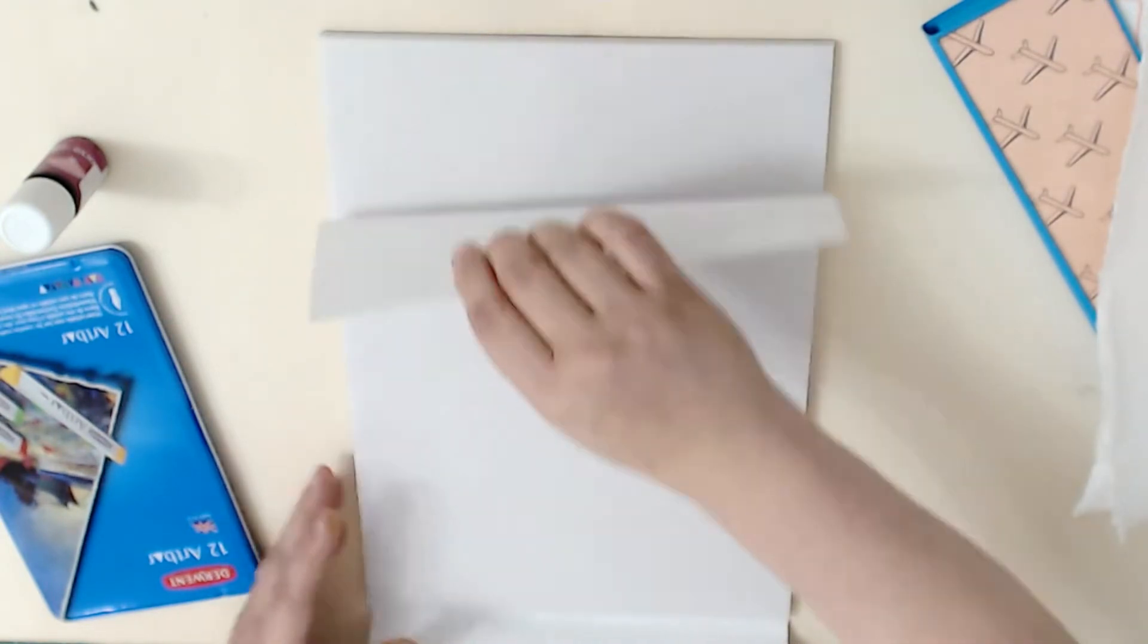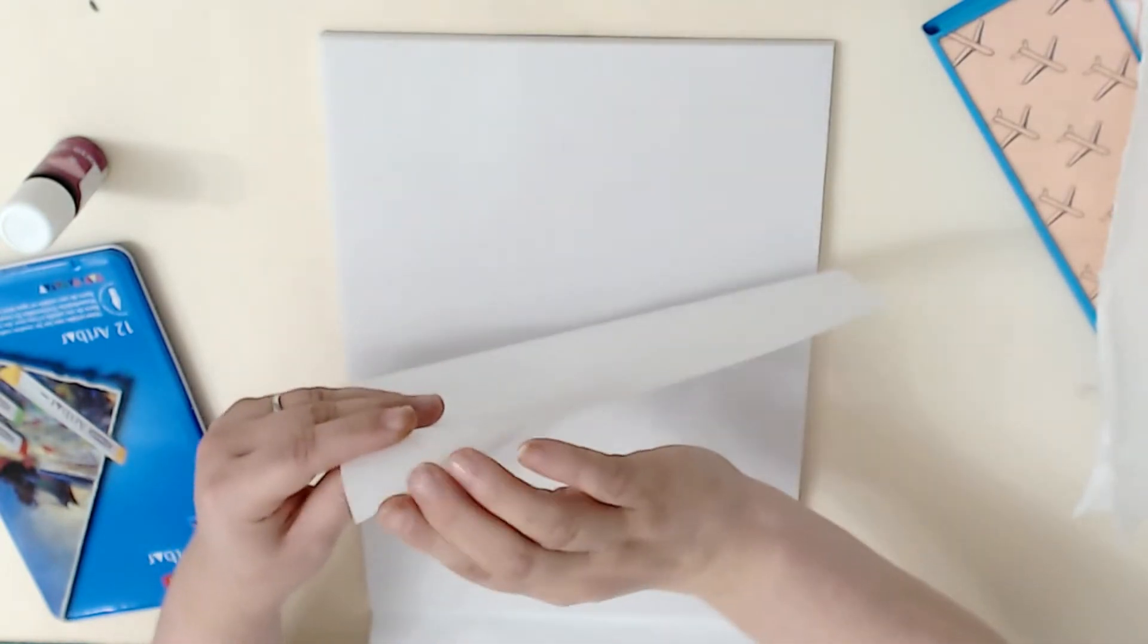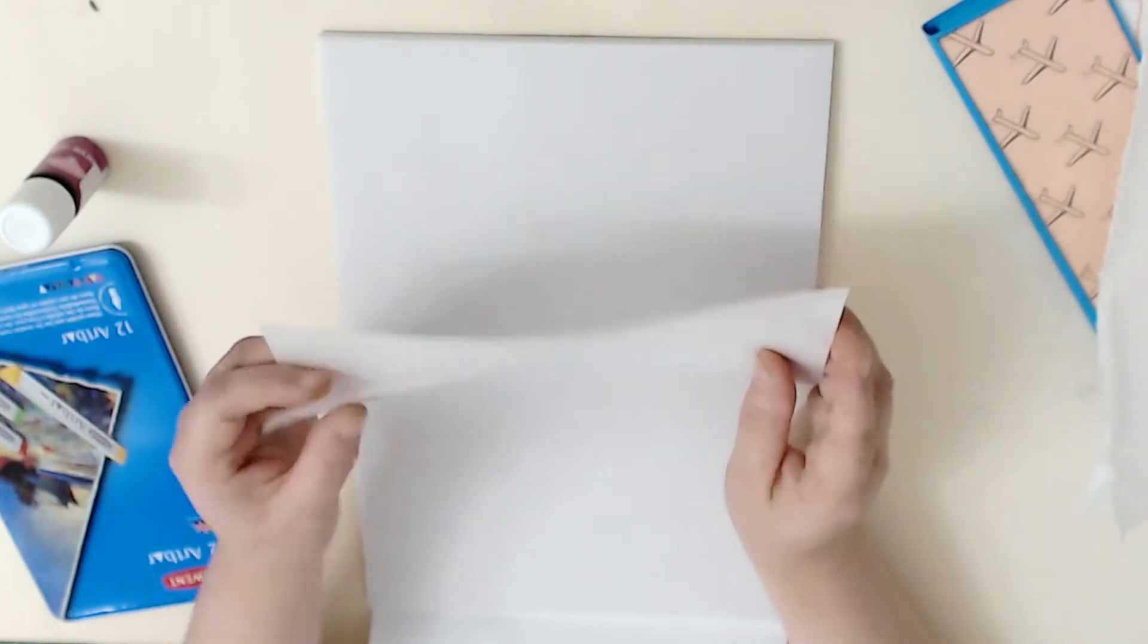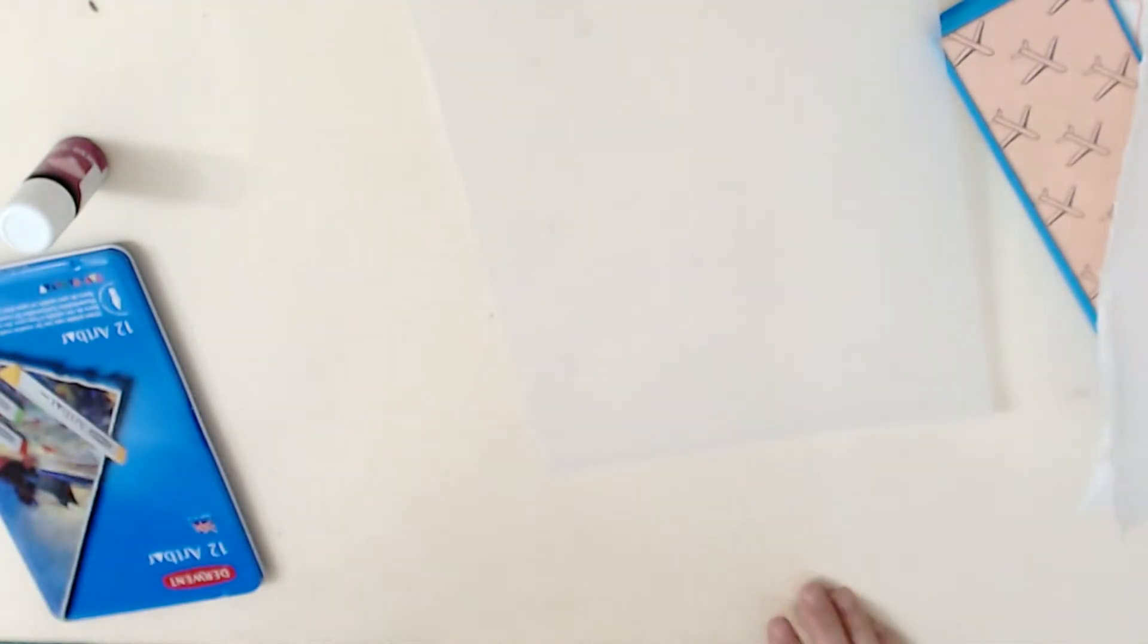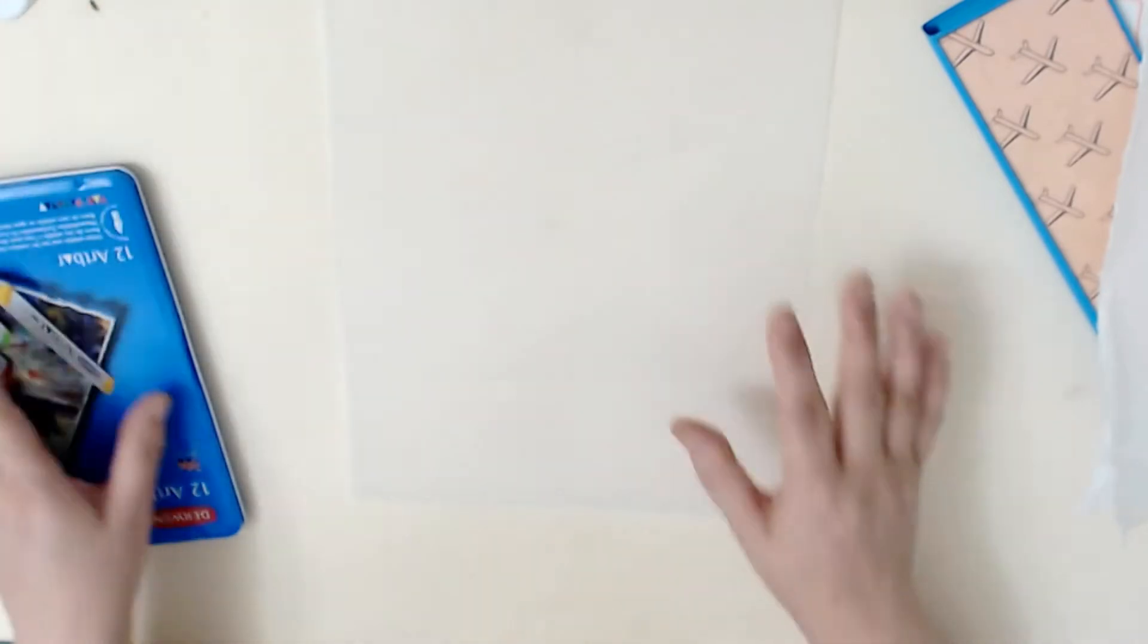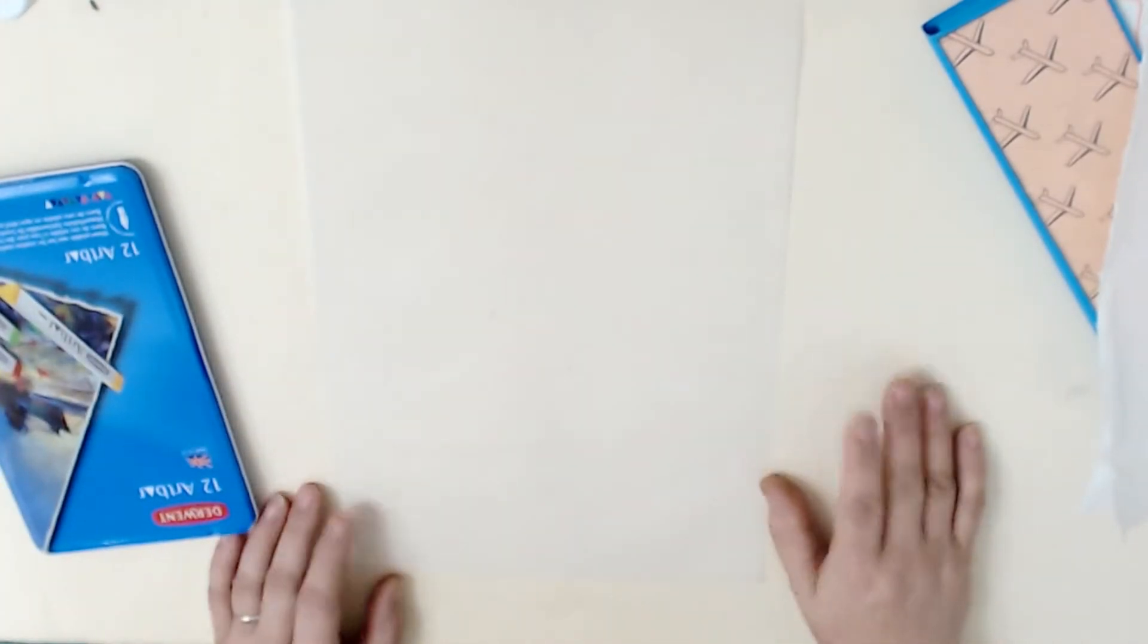Now to make an actual envelope, I used my envelope punch board. A lot of the scoring boards have devices in them that you can use to do an envelope. Right now I'm just going to focus on how to color your vellum.